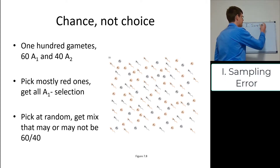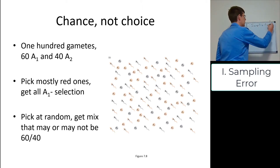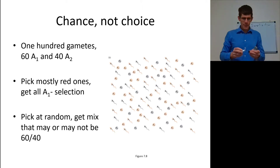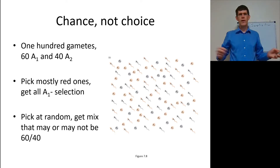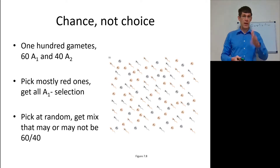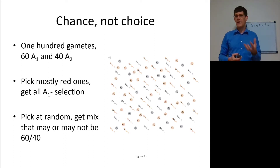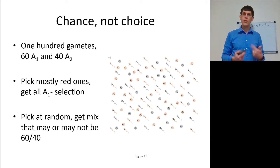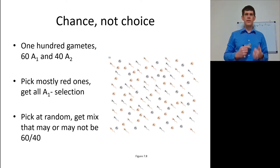I want you to find figure 7.8. It's got about a hundred gametes — 60 that are type A1 and 40 that are type A2. If you were to pick mostly red ones on purpose, that would be getting all A1. That's how natural selection, artificial selection, or sexual selection works. If it's looking for the red, it's going to very quickly and clearly favor an allele.